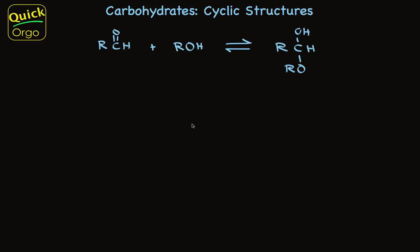When an aldehyde is treated with an alcohol, a hemiacetal is formed. This reaction works for ketones too, but I'm going to focus mostly on aldehyde, so I've used an aldehyde example here.